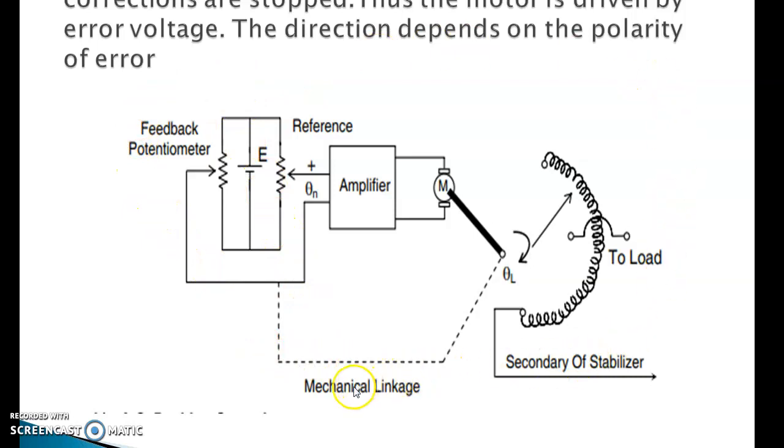Thus the motor is driven by error voltage. The direction depends on the polarity of the error. We have drawn a figure here. This is mechanical linkage, this is secondary of the stabilizer connected to the load. This is the motor connected with an amplifier, and this is reference voltage and the feedback potentiometer.